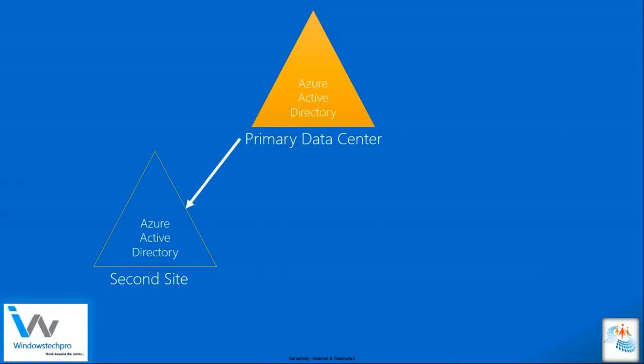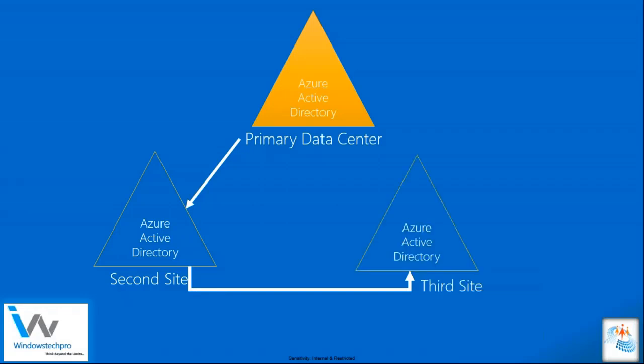If the primary site goes down, your data will still be available at the secondary site. Once the secondary site has your Azure Active Directory information, it will sync to another location, which we call the third site. The third site gets a copy from the secondary site — it won't talk directly to the primary site. The third site then replicates to the next site or next geographical location, so your Active Directory data is always available.